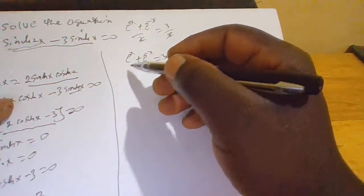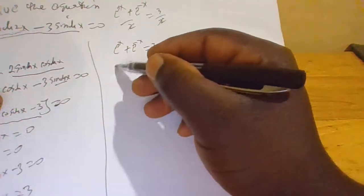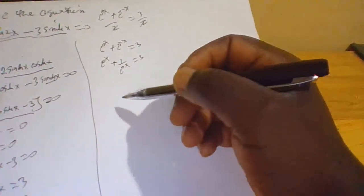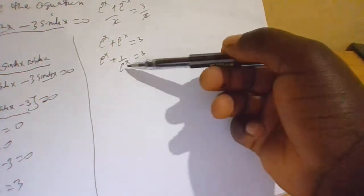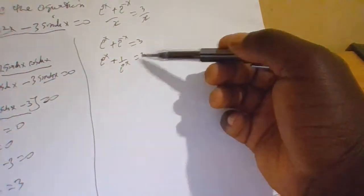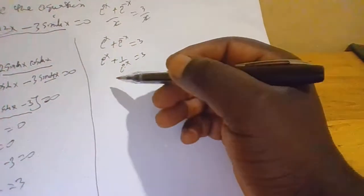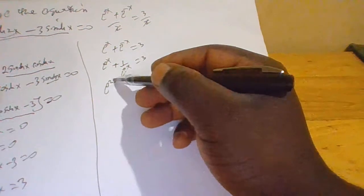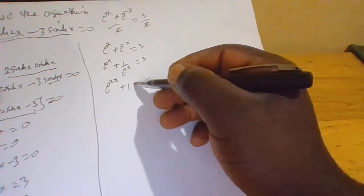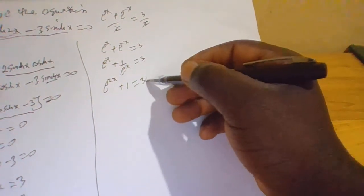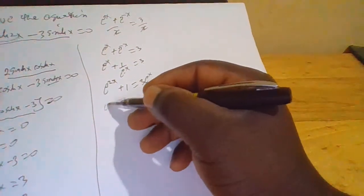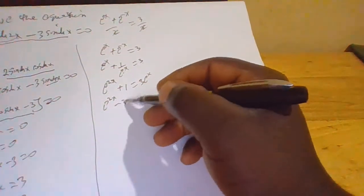Now this equation is the same as e^x plus 1 over e^x equals 3. We can multiply through by e^x to remove the fraction. Therefore e^x times e^x gives e^(2x), and we remain with 1 on the other term, equals 3 times e^x. Moving across the equal sign, the equation becomes e^(2x) minus 3 e^x plus 1 equals 0.